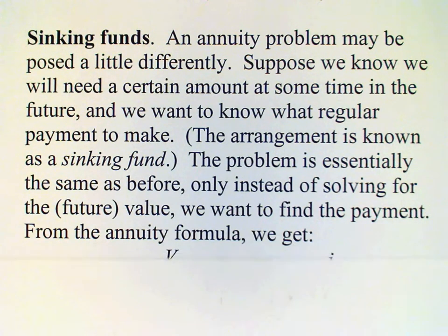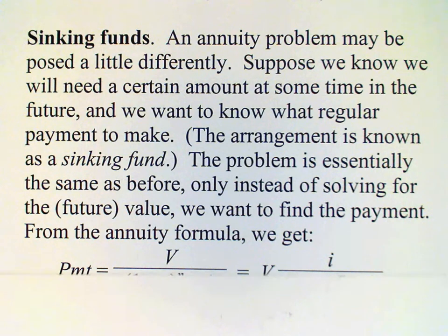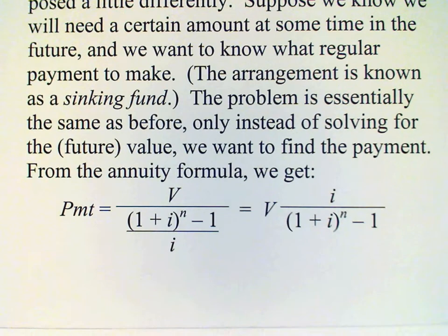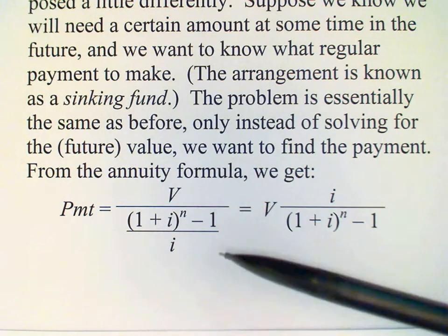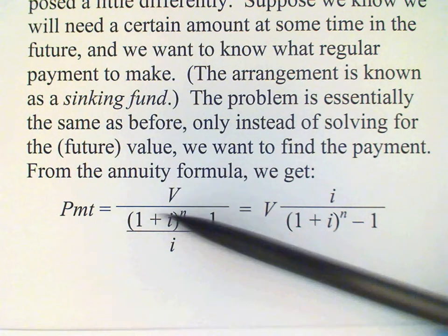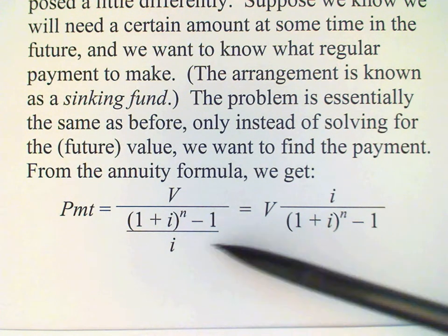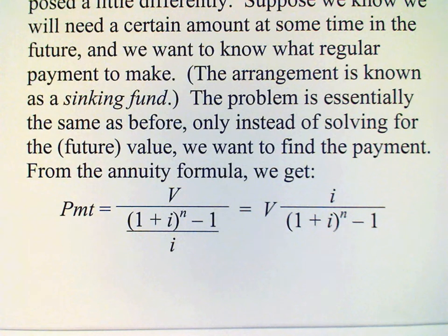It sounds difficult perhaps but it isn't really because all we need to do is rearrange the annuity formula a little bit to solve for the payment. That can be done easily by simply dividing both sides of the formula by the annuity factor. The annuity factor, remember, is 1 plus i raised to the n minus 1 divided by i. If we divide on both sides of the annuity formula by that factor, we get this result here.